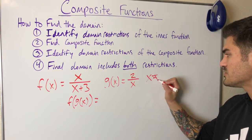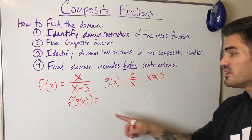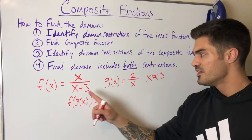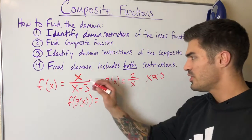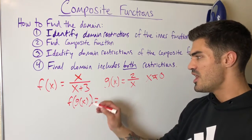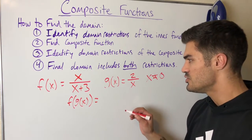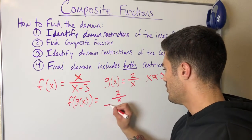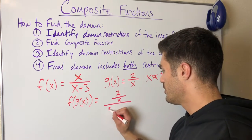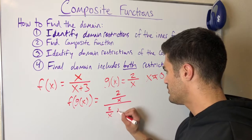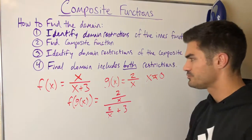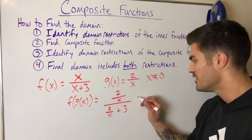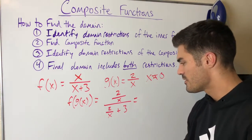Every number has to go through the inner function first, so if some values are excluded from the domain of the inner function, we exclude them from the composite function as well. We've established that x cannot equal zero. Now let's find the composite function by plugging g(x) into f. Since g(x) = 2/x, I replace every x in f with 2/x, giving me (2/x) over (2/x + 3).